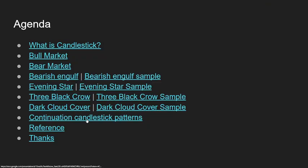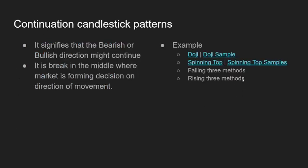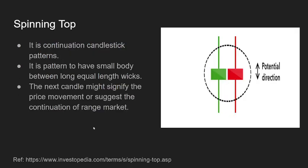Today we are continuing with candlestick patterns — specifically the spinning top. A spinning top is a candlestick pattern which shows continuity of the trend, so it's a continuation pattern. It is characterized by a small body between two equal long wicks, and it has the potential of going in any direction — either up or down. Sometimes the next candle signifies the movement, telling you whether it will go up or suggesting continuation of the range.